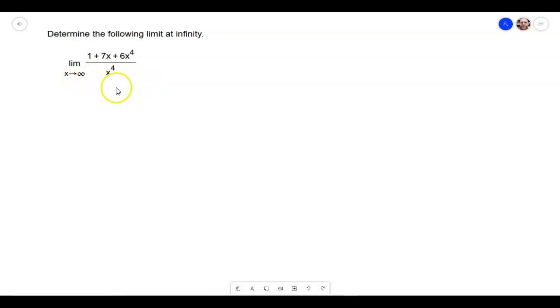In this case, the example here, the x is approaching positive infinity, and notice something really important, that the highest exponent on the top is equal to the highest exponent on the bottom.